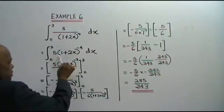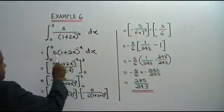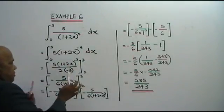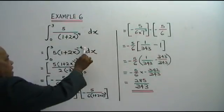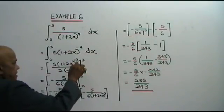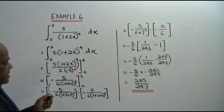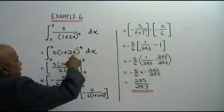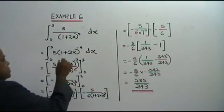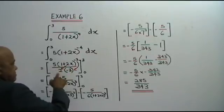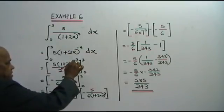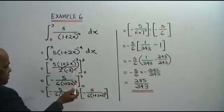First you bring this up as usual. Power of 4 when you bring up becomes power of negative 4. When you integrate, negative 4 plus 1 is negative 3, and you bring the negative 3 down, so you divide by negative 3. Now, 1 plus 2x is a linear expression, therefore you bring the 2 down here. So 2 times negative 3 is negative 6. You bring this bracket down with power of 3.